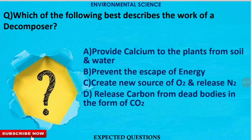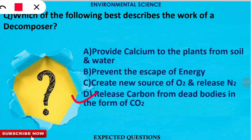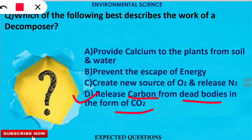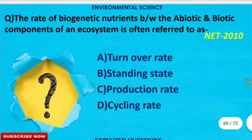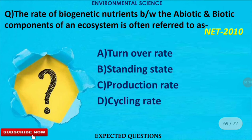The next question is: which statement best describes the work of a decomposer? The correct option is option D — decomposers release carbon from dead bodies in the form of carbon dioxide into the atmosphere. In this way they play a very important role in the detritus food chain.